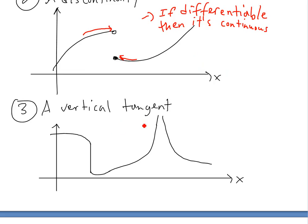The third and last type of function that's not differentiable is one that has a vertical tangent. I drew two types here — this one is a continuous vertical tangent, and this one is a discontinuous one. As you can see, the slope is going to infinity.